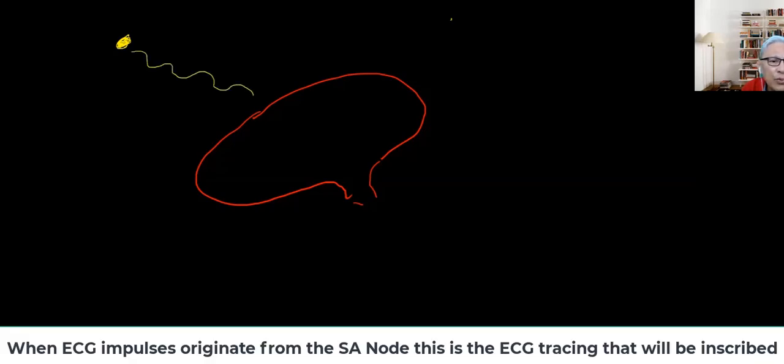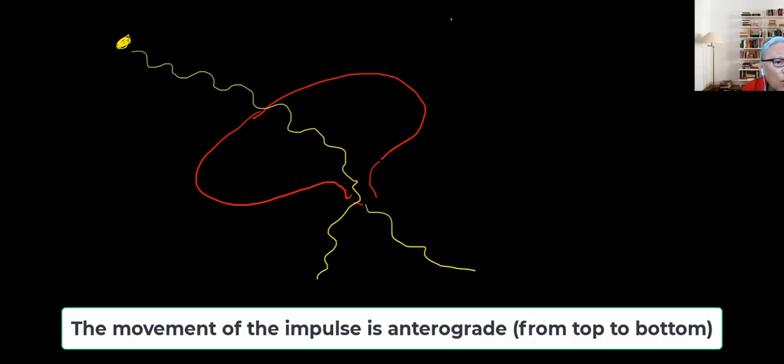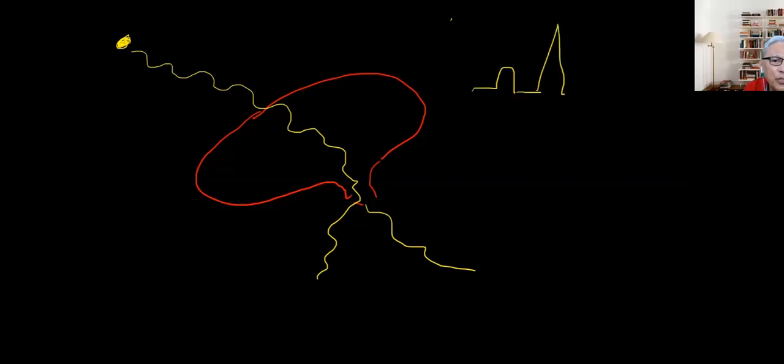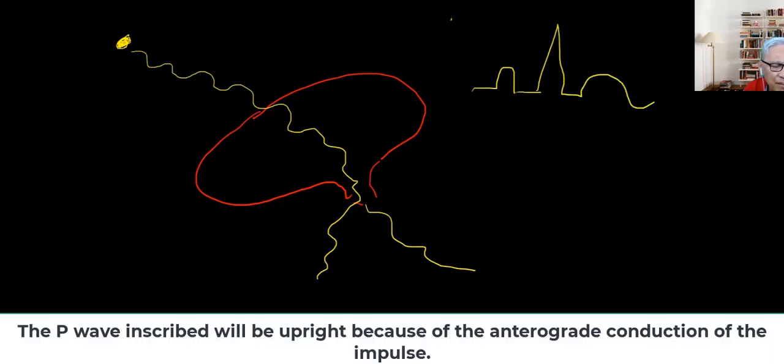Let's say now that a waveform originates from the sinus node. It goes into the atria, into the AV node, into the bundle branches, and then onto the Purkinje fibers. What happens to the P wave? The P wave is a positive waveform, so it will result in something like this.